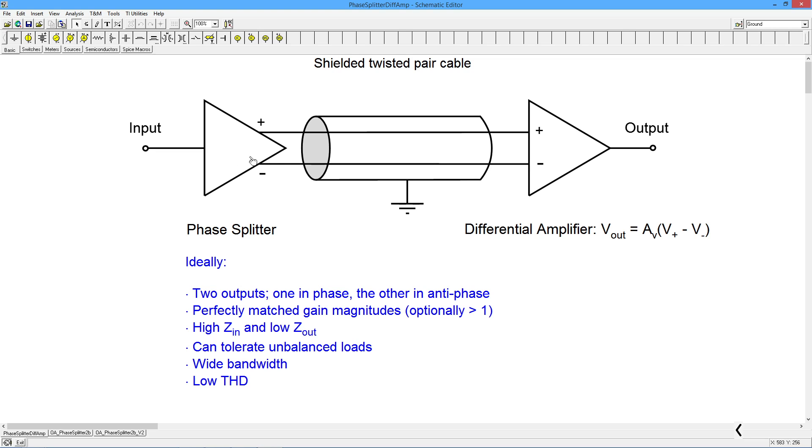These magnitudes you would like to be perfectly matched, exact same magnitude, the only difference being the phase. You might have a gain, a net gain here, it might be unity gain, could be a gain of 10, all depends on the application. Ideally this will have a high input impedance. These outputs will be low impedance, it will be able to tolerate an unbalanced load. So it's an advantage if it can tolerate an unbalanced load. Ideally it should have a wide bandwidth and a low distortion.